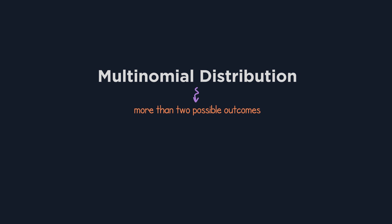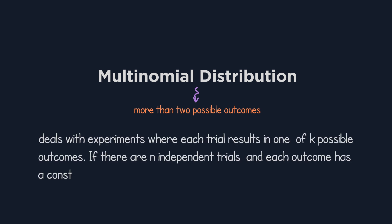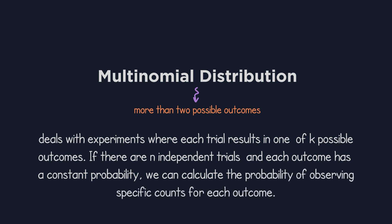The multinomial distribution deals with experiments where each trial results in one of k possible outcomes. If there are n independent trials, and each outcome has a constant probability, we can use the multinomial distribution to calculate the probability of observing specific counts for each outcome.